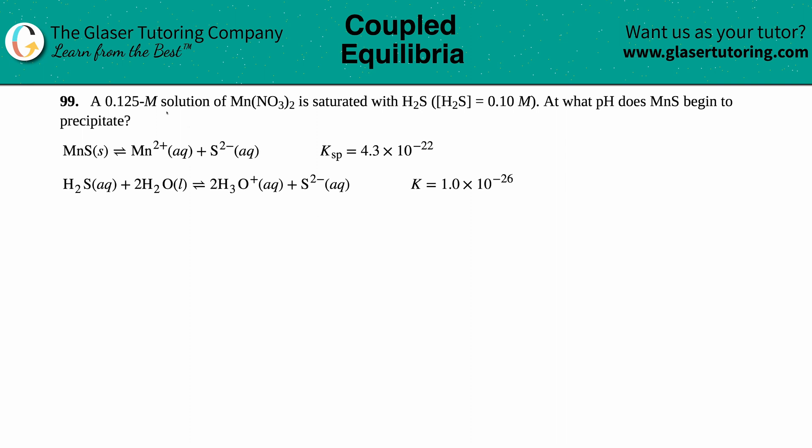Number 99. A 0.125 molarity solution of Mn(NO₃)₂ is saturated with H₂S, and the H₂S concentration is 0.10 molarity. At what pH does MnS begin to precipitate?